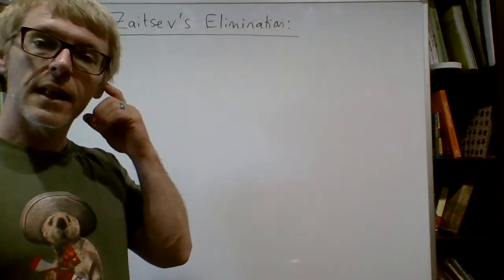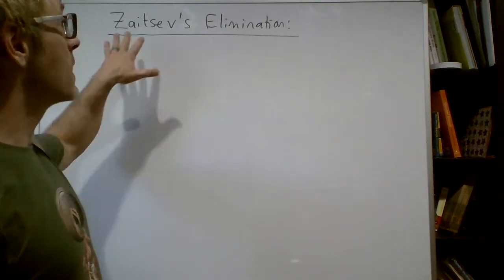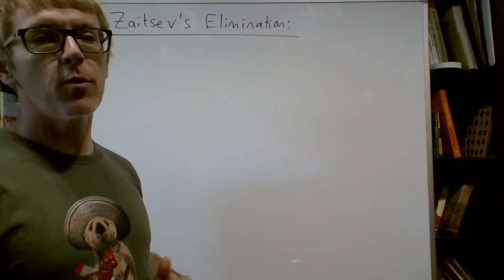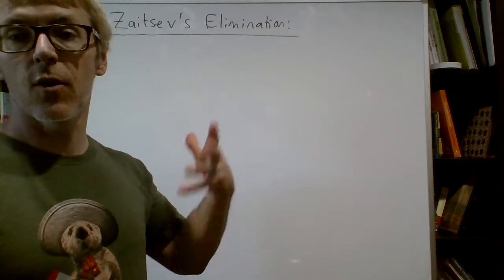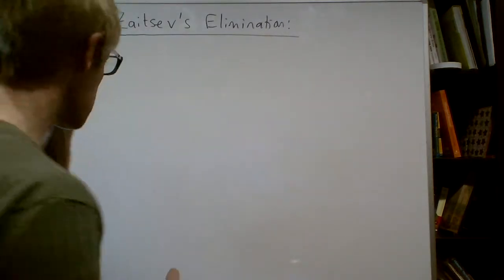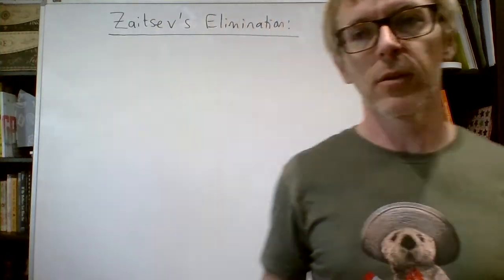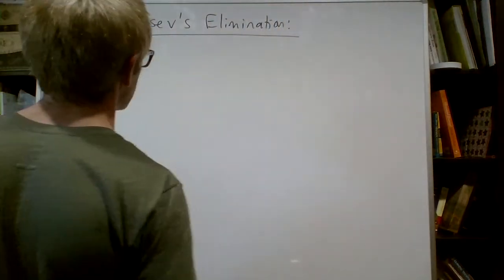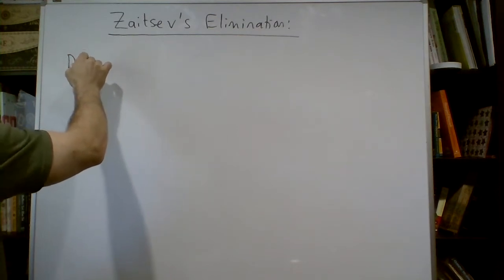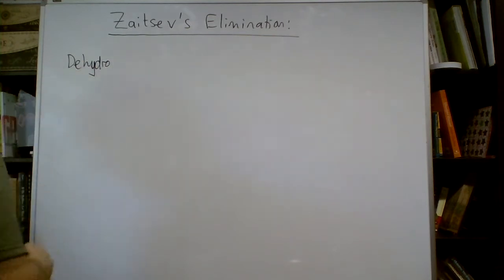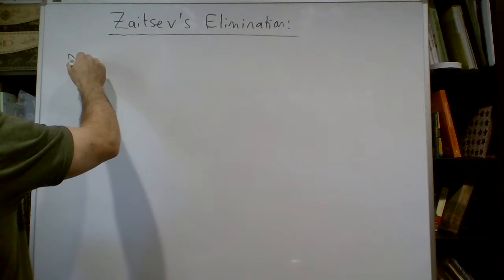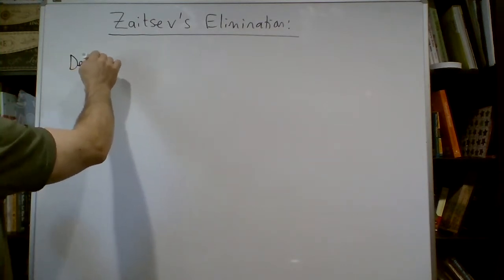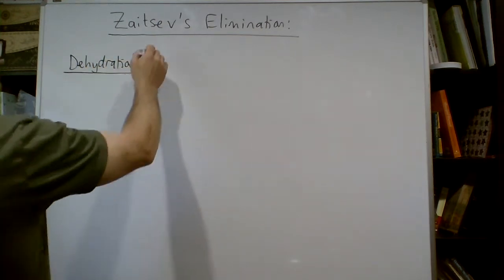There's a type of chemistry we can do on alkanes provided the right atoms are present - it's called Zaitsev elimination. The word 'elimination' means to eliminate or remove - we remove something from the alkane. Zaitsev was the scientist who coined this type of chemistry. Atoms that can be reasonably easily removed are those that are stable once removed. We'll look at dehydration, which means removing water.